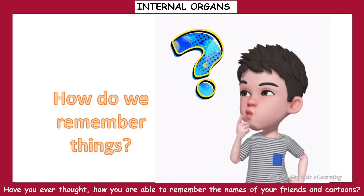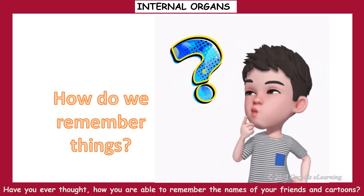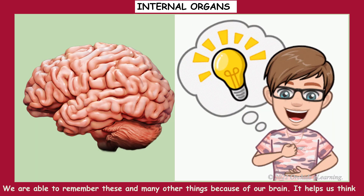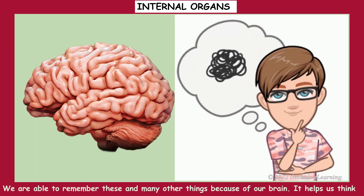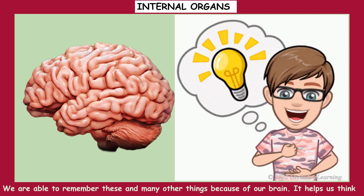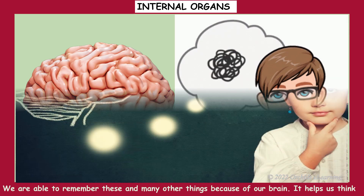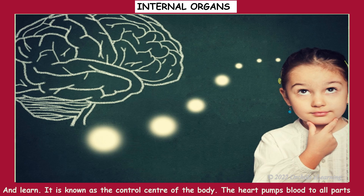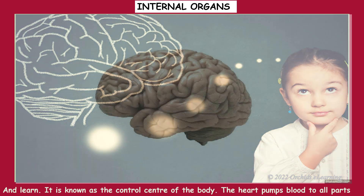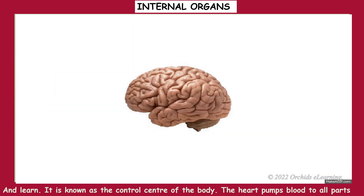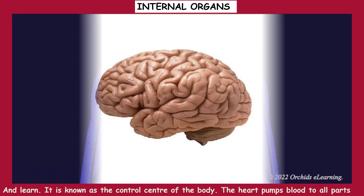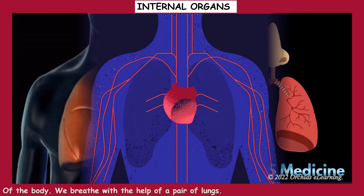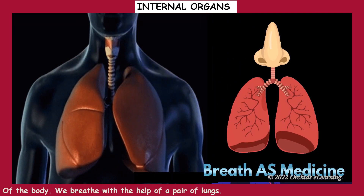Have you ever thought about how you are able to remember the names of your friends and your favorite cartoons? We are able to remember these and many other things because of our brain. It helps us think and learn. It is known as the control center of the body.